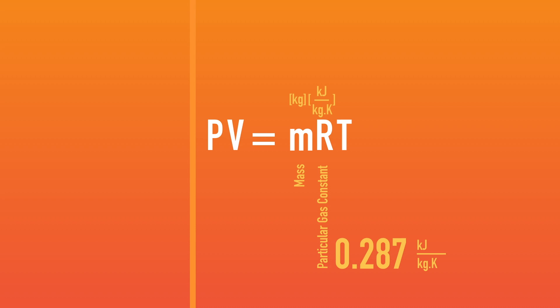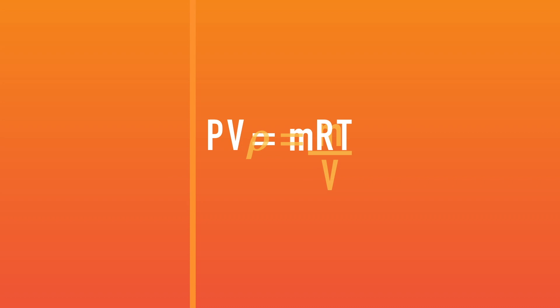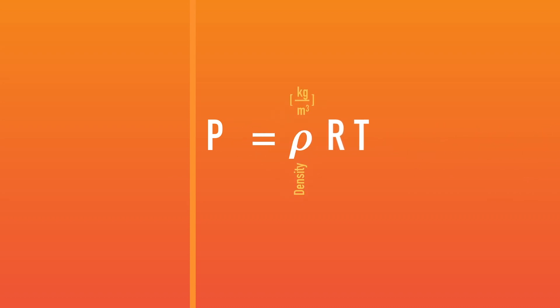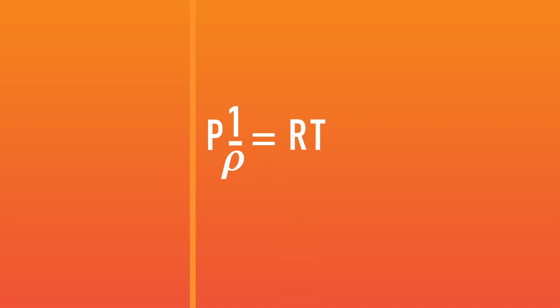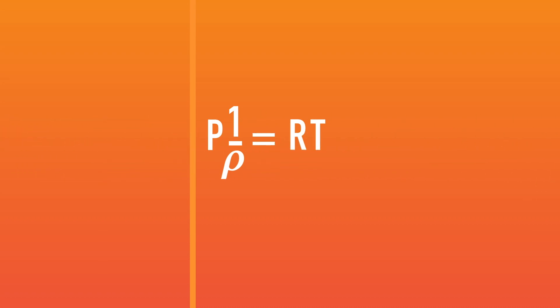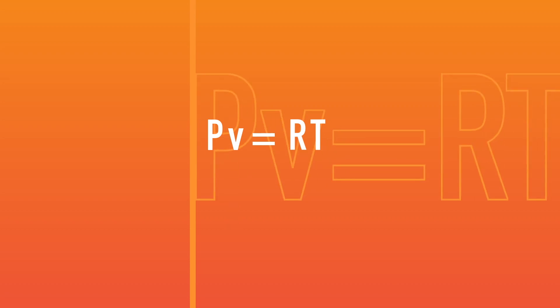Next, we also recognize that mass and volume can be combined to define density. With a little manipulation, we arrive at the density-based ideal gas law. While this equation is useful in some situations, we often use the inverse of density in thermodynamics, called specific volume of gas. Specific volume tells us how much volume a unit mass of gas occupies. Finally, we arrive at the ideal gas law more commonly used in engineering thermodynamics: Pv equals RT.